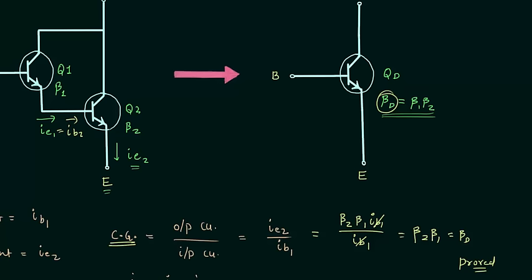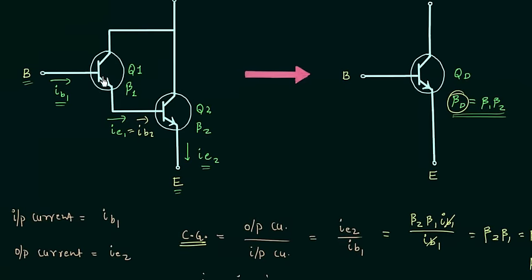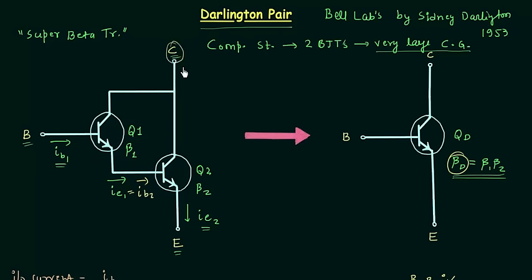The next point is related to the space occupied. We are using two transistors and these two transistors share the same collector. So if we compare the space occupied by two individual transistors, the space occupied by the Darlington pair is smaller, because the Darlington pair uses a shared collector.